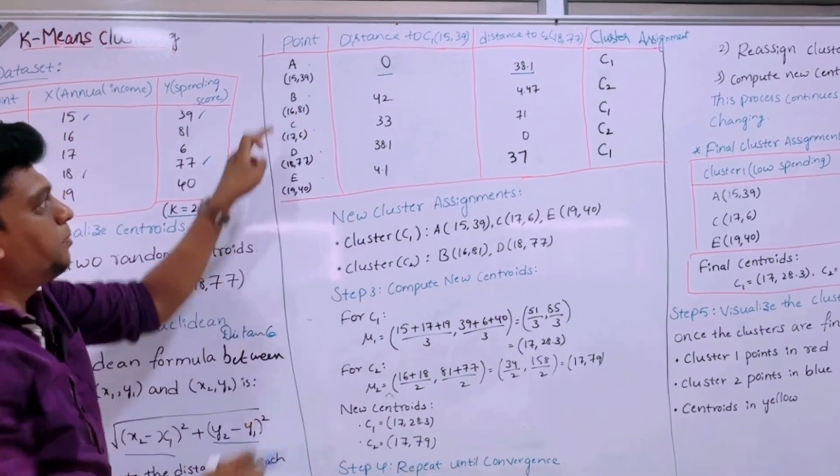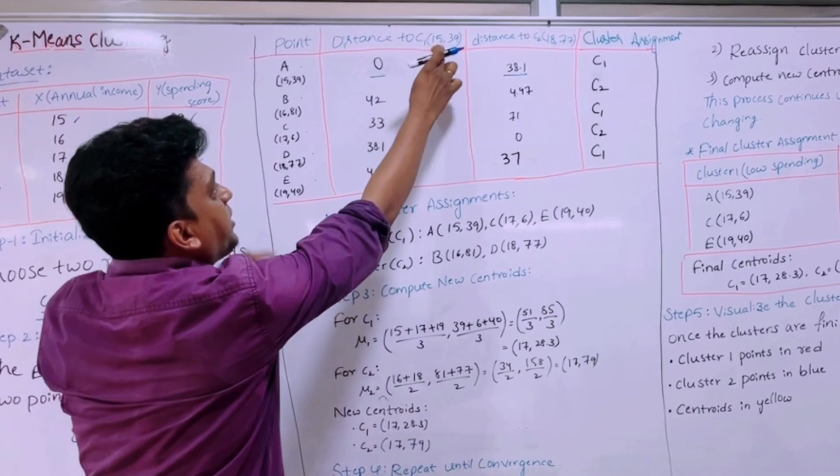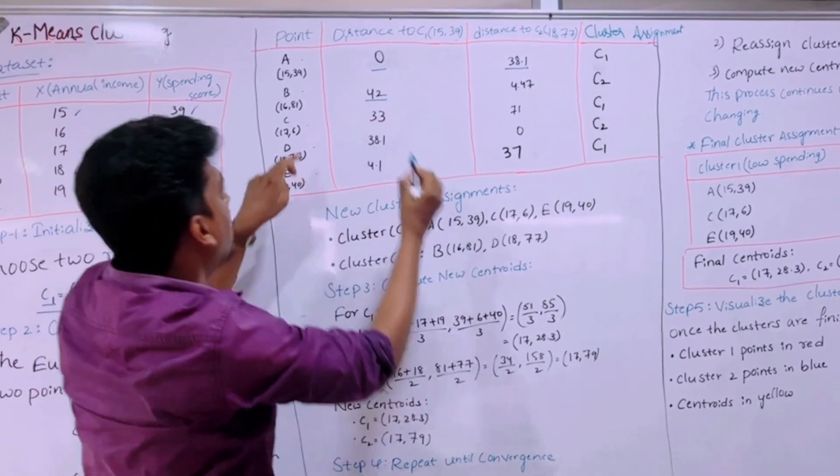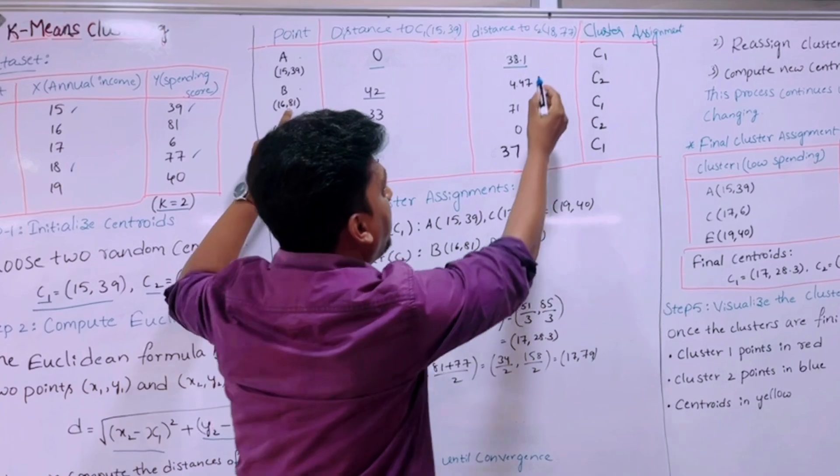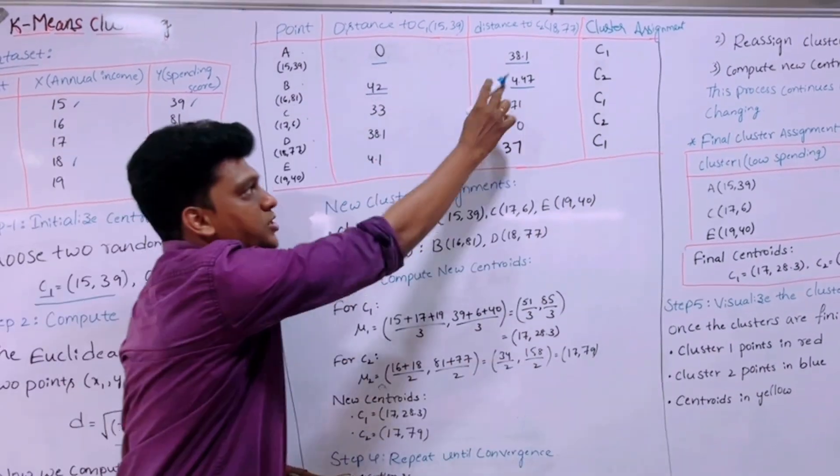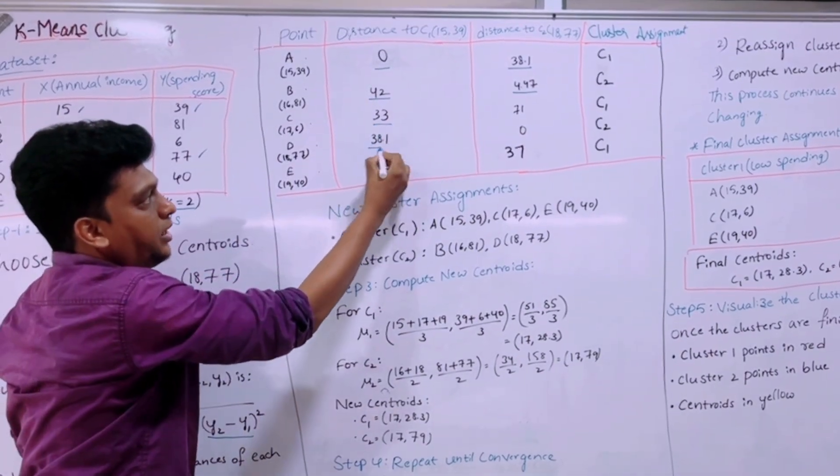So similarly for point B it is 16,81. We are calculating the distance between this point and this point 15,39, it can be obtained as 42. Then this 16,81 and this 18,77, it can be defined as 4.47. So similarly we are finding the distance between the points.